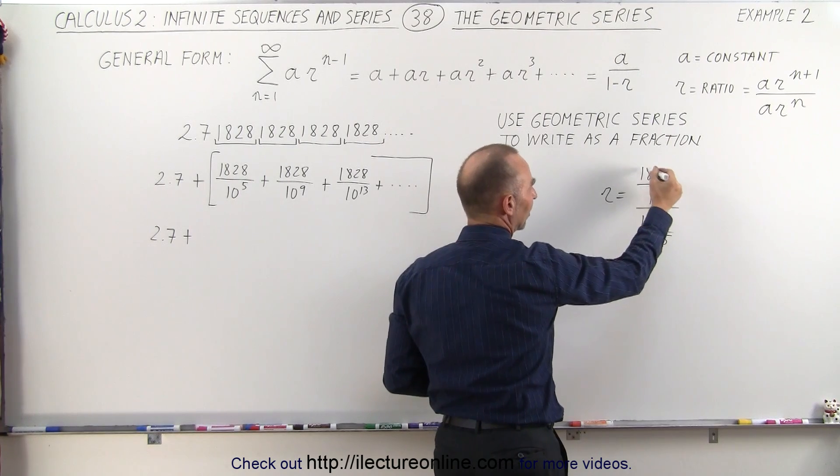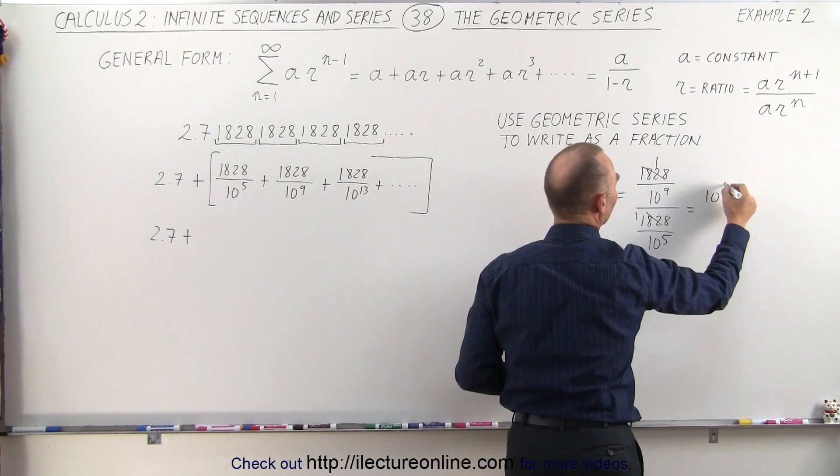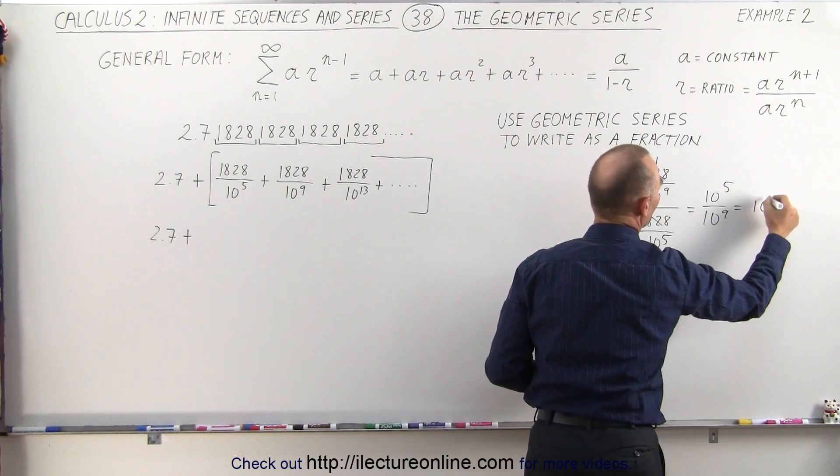Now notice the 1828s cancel out, and then this becomes 10 to the 5th divided by 10 to the 9th, which is equal to 10 to the minus 4.